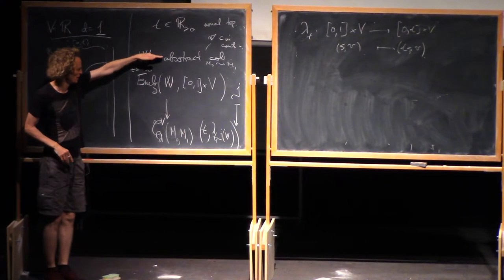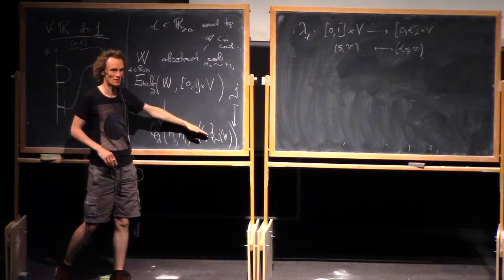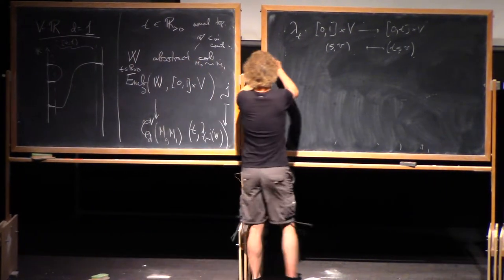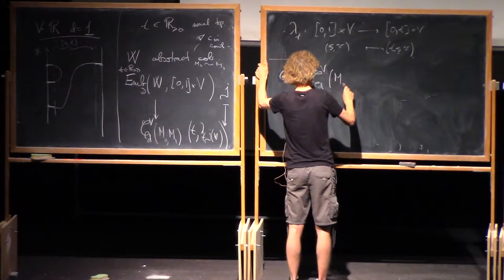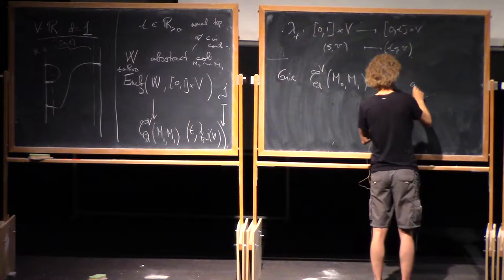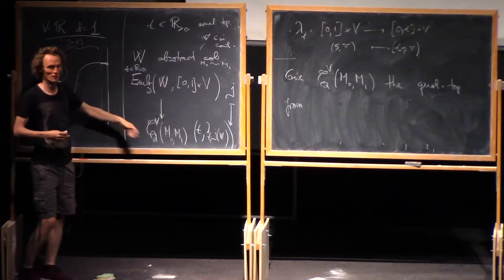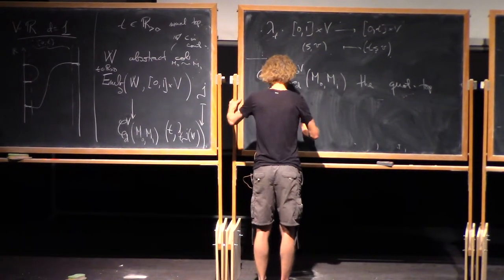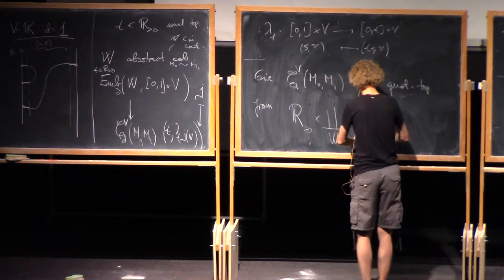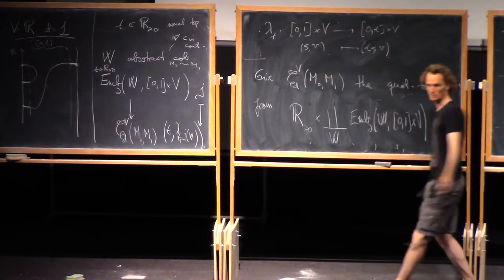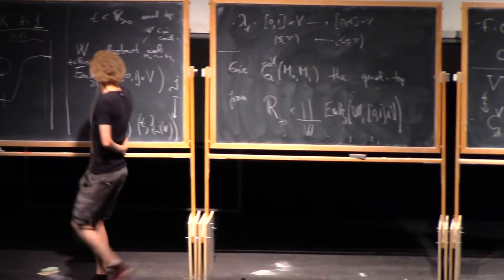So, for each abstract cobordism, this is not surjective because the image is always diffeomorphic to the W. But it precisely surjects onto the embedded cobordisms that are diffeomorphic to the given abstract one. And then we give C(M0, M1) the quotient topology from, you shouldn't just fix W because then this is not surjective and the quotient topology is going to be a little bit weird. But just take all possible Ws. So, if you take the disjoint union of all possible Ws, you get something that surjects to this set of embedded things.